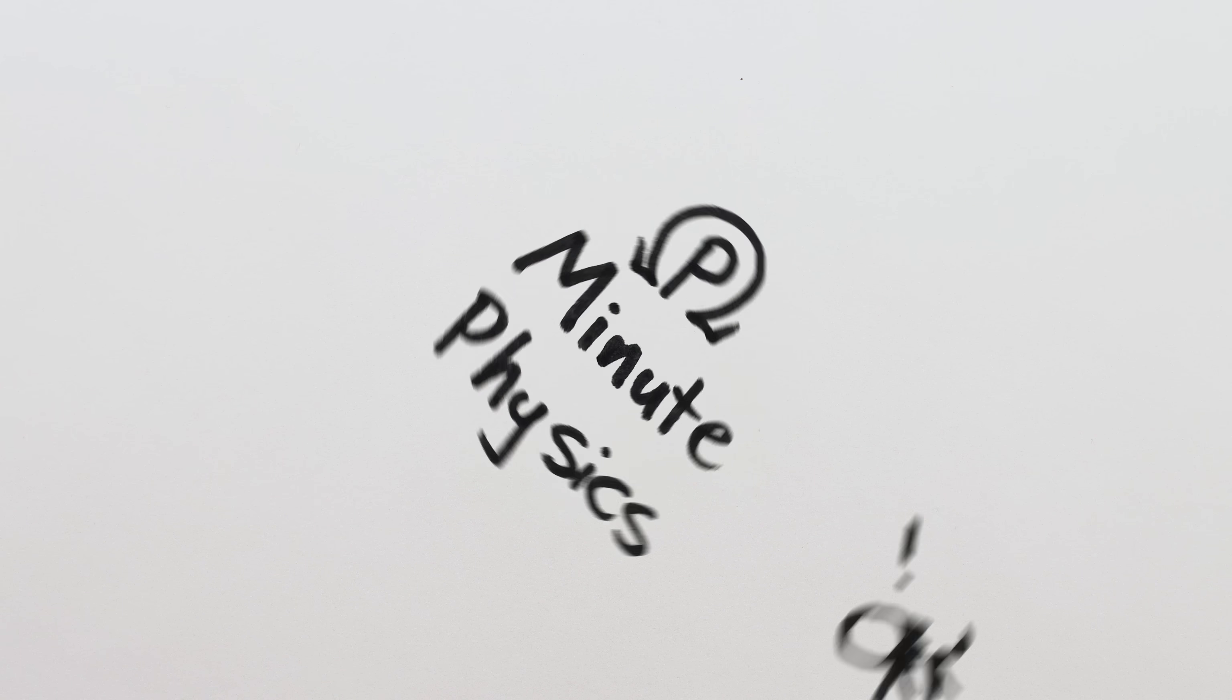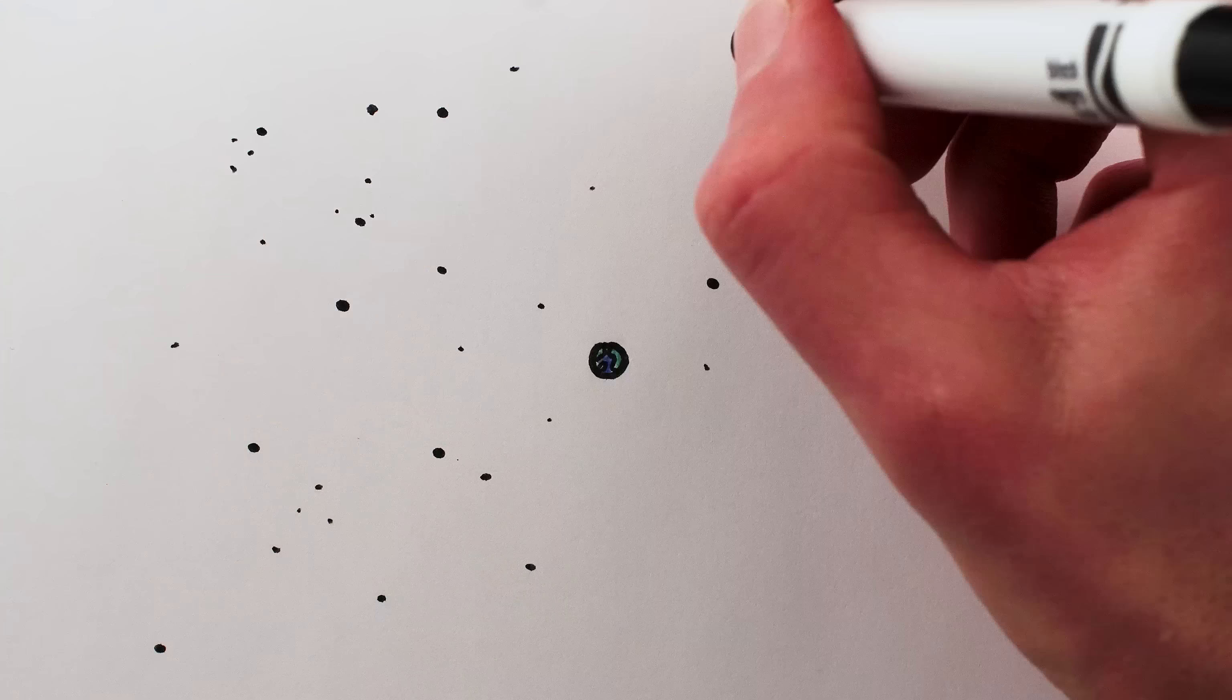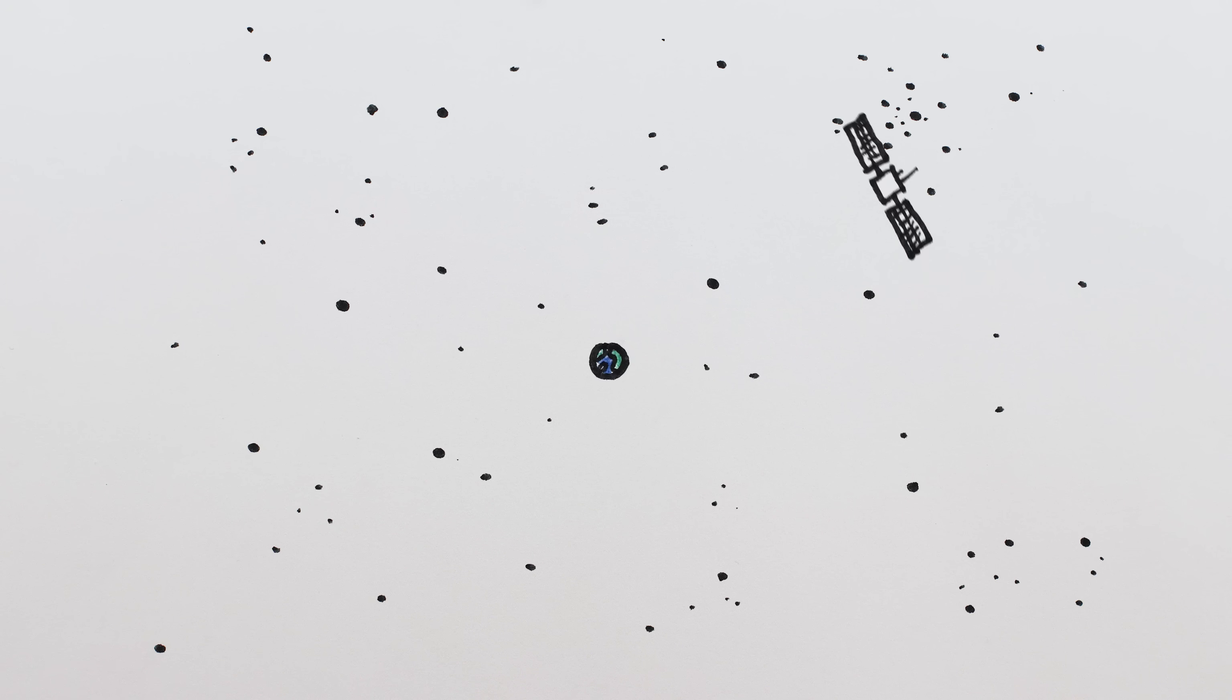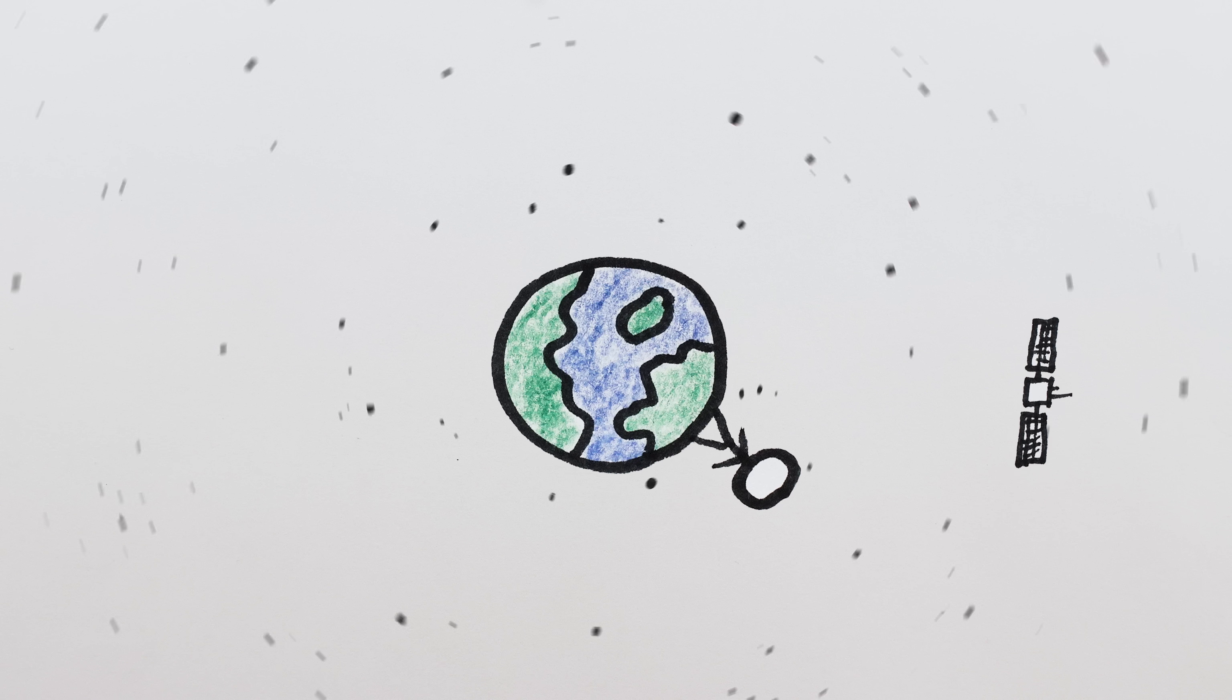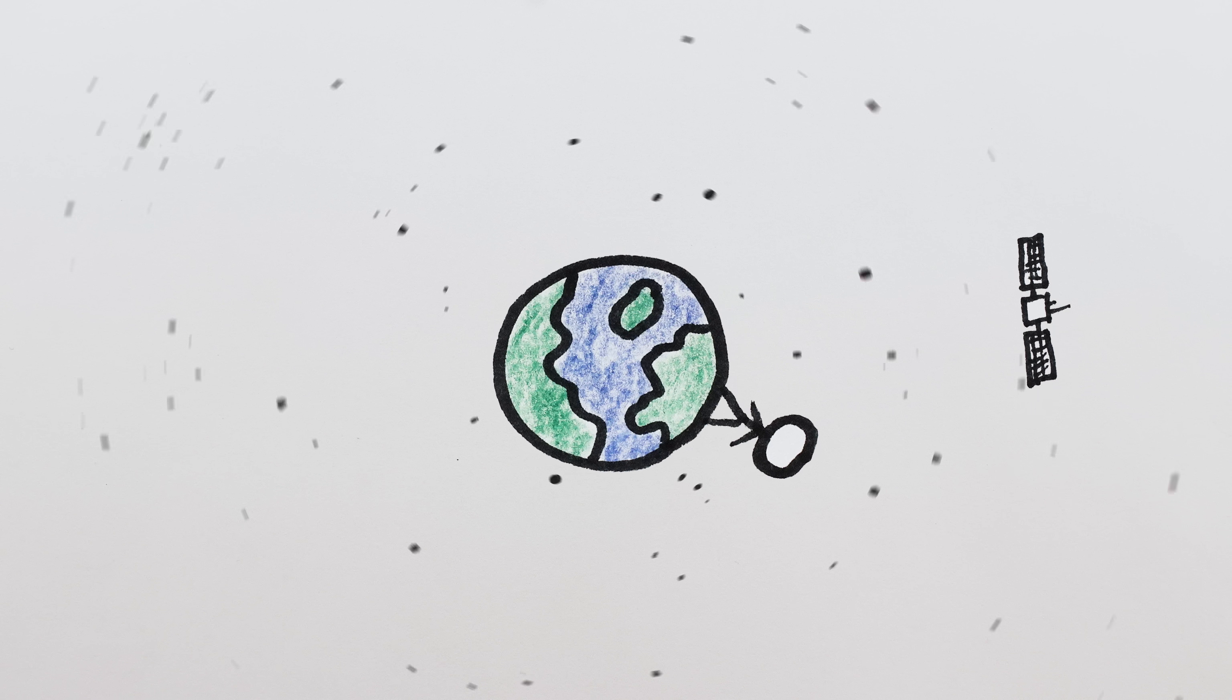Geosynchronous orbits are weird. On the one hand, satellites in geosynchronous orbits look from afar like they're orbiting the Earth just like any other satellite, but from down here, they appear to be floating, stationary, 36,000 kilometers above our heads.